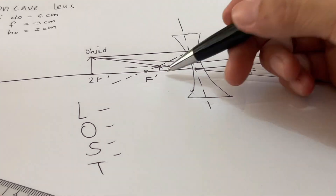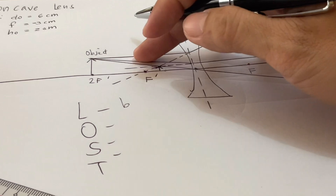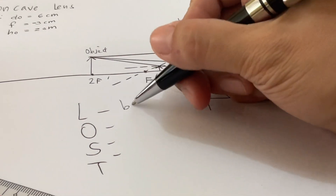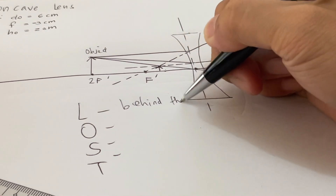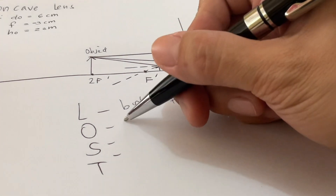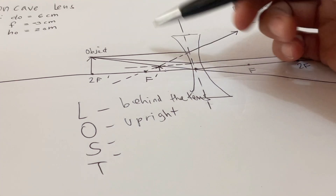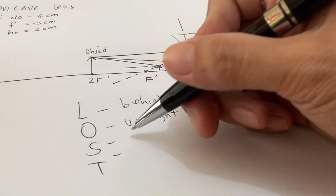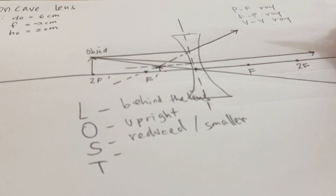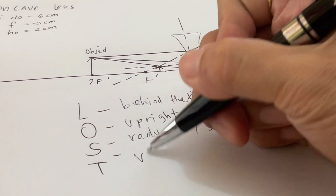To describe our image using the acronym LOST: for Location, the image is behind the lens on the negative side. For Orientation, the image is upright. For Size, comparing the image to the object, it is reduced or smaller. For Type, since the image is upright, it is a virtual image.